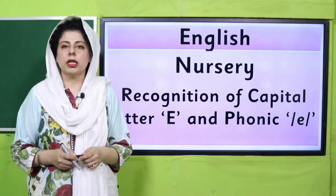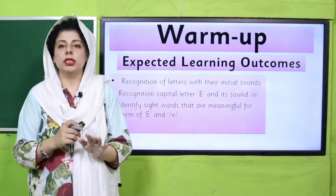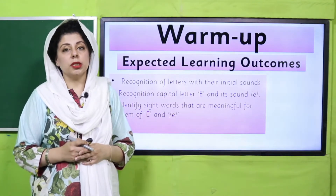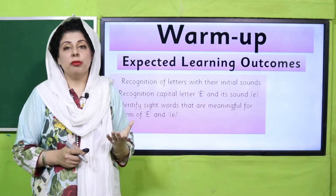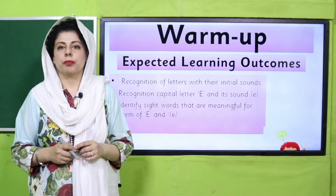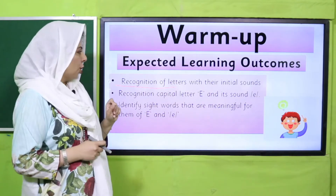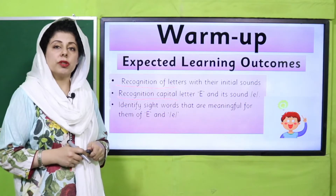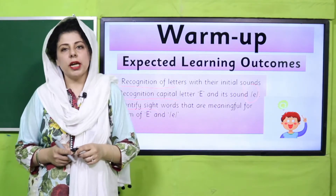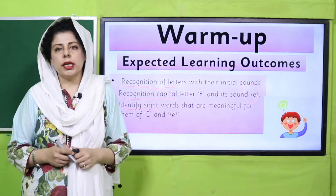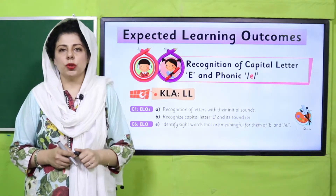We will learn the names of the letters in the nursery class. This is a learning projection — you can learn the playgroup voices, stories, and vocabulary. We will learn the words, the alphabet, the name, and how it looks. Our expected learning outcomes are: recognition of letters with their initial sound, recognition of the capital letter along with its sound, and practice of sight words.